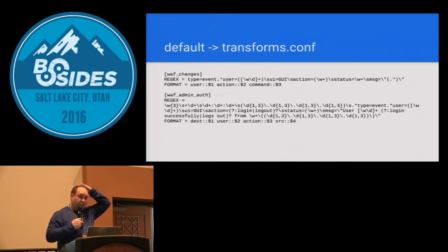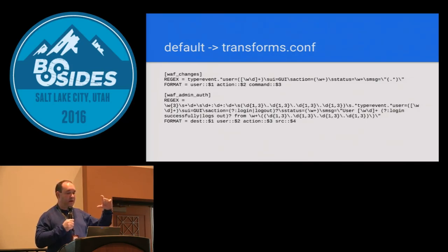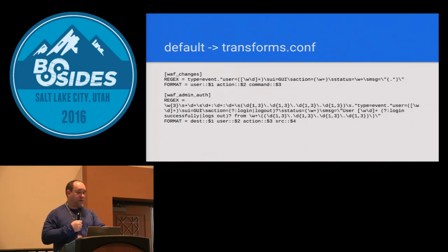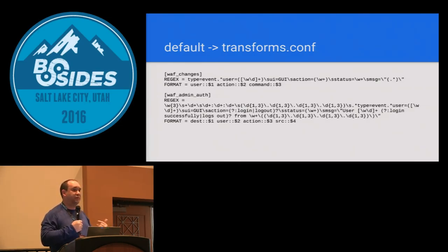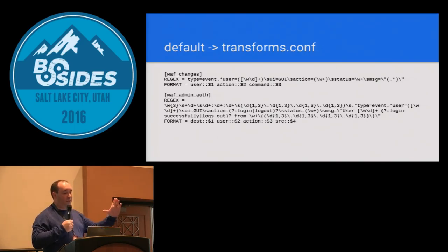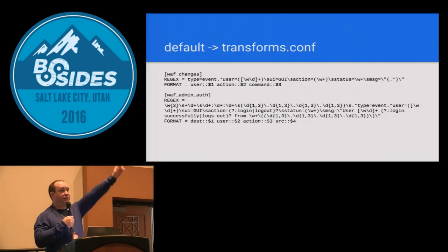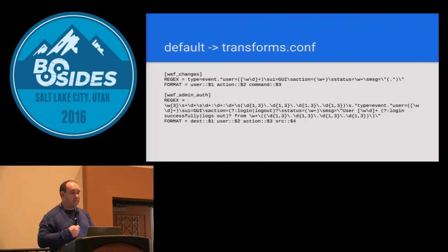Transforms — this is where the meat really is. The name in the brackets is only relevant within your app; you can't search on it in Splunk internally. For the top one, WAF changes, I've got a regex looking for a specific log entry. Using Perl-compatible regular expressions, you pull in whatever is in parentheses as a variable. Under 'format =' I'm saying the first item in parentheses is the field 'user,' the next is the field 'action,' the next is 'command.' Those now become fields — visible on the left side when you're looking at an event in Splunk.